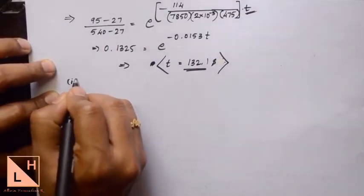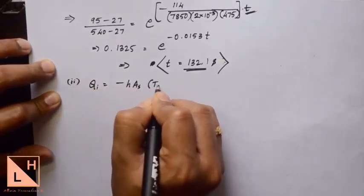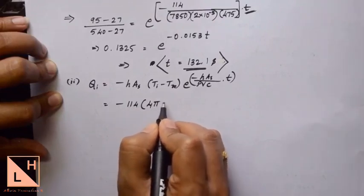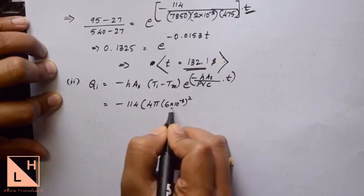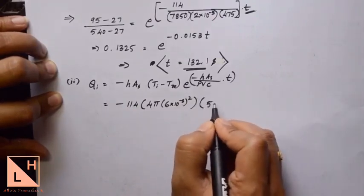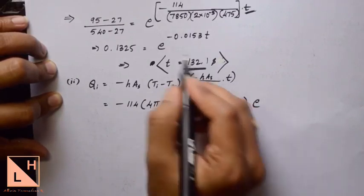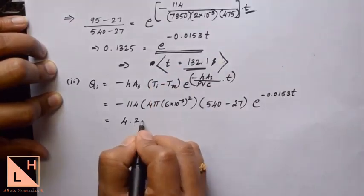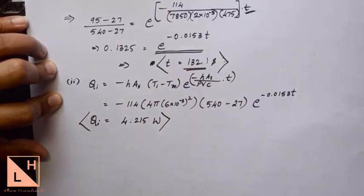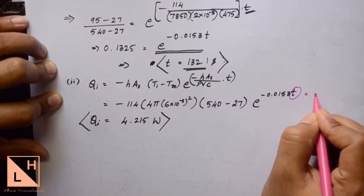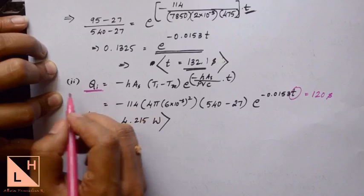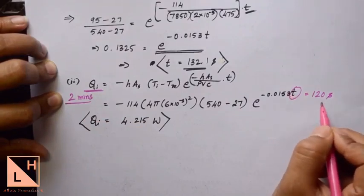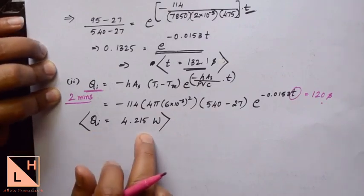Now we need to find the rate of heat flow. To calculate the surface area of the sphere, the formula is 4πr², where radius is 6 millimeters. In fact, the exponential term e to the power of minus 0.0153 times t is the same as already calculated. Substituting t as 120 seconds, because they asked for instantaneous heat flow at 2 minutes, we get the instantaneous heat flow as 4.215 watts.